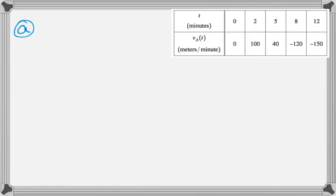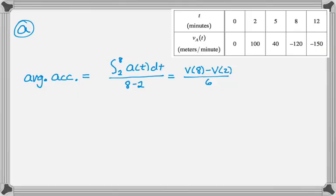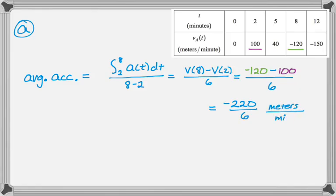First thing, we need the average acceleration. Average acceleration is the integral of acceleration divided by the interval over which we're interested. So the average acceleration is going to be the integral from 2 to 8 of A of T, DT, divided by 8 minus 2. That's going to be V of 8 minus V of 2 over 6, because the integral of acceleration is velocity. We read those off the table. V of 8 is negative 120, V of 2 is 100. We get negative 220 over 6, and that's in meters per minute squared. You could simplify that to negative 110 over 3 meters per minute squared. That's part A.